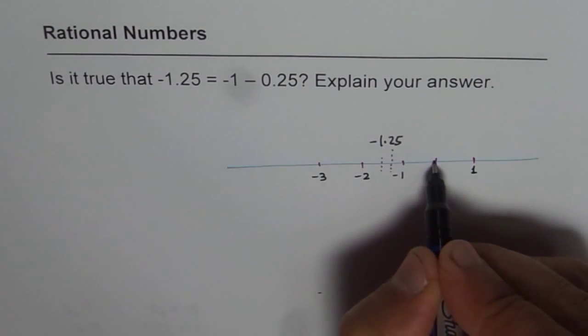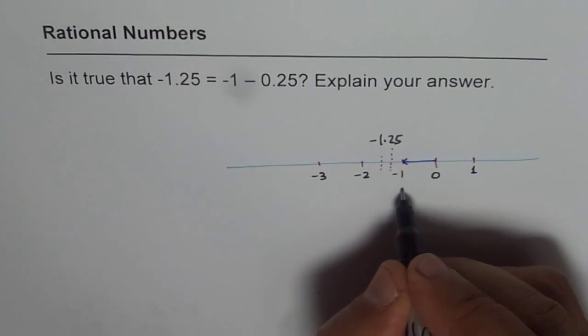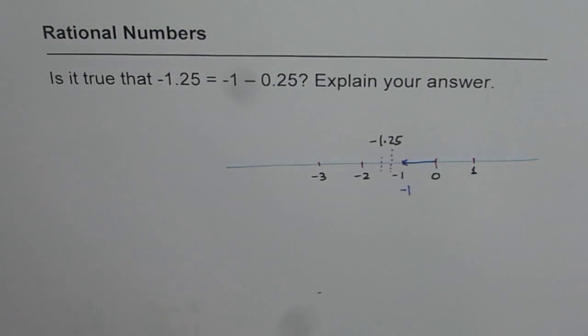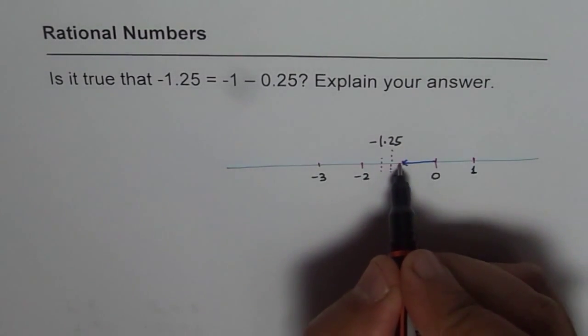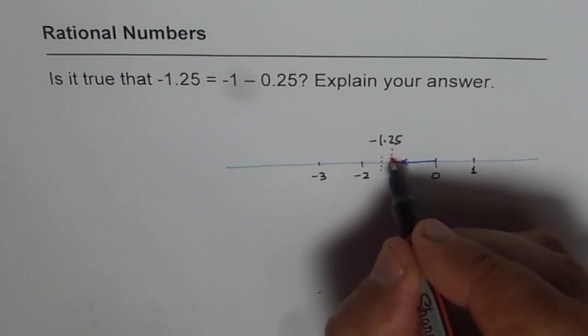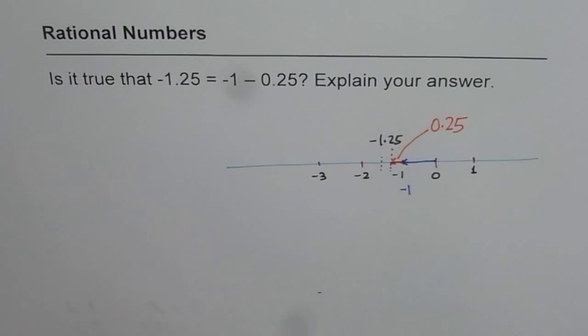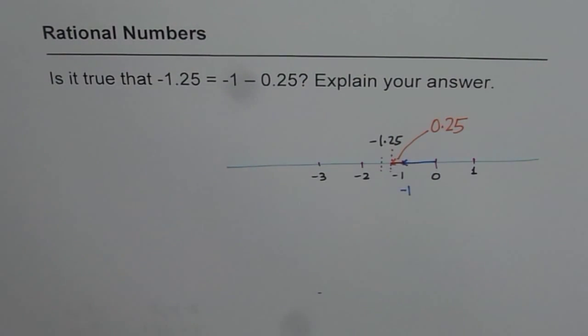What we have from here is, this much is -1. And then what we have here is 0.25. This much is 0.25. So this much space here is 0.25. Now, are we really subtracting 0.25 from -1 to get -1.25? That is the question.